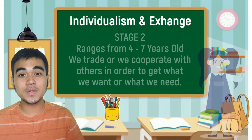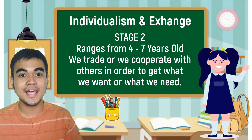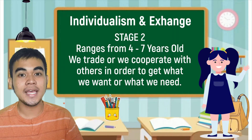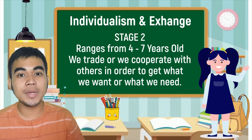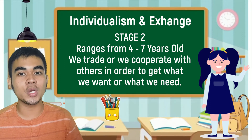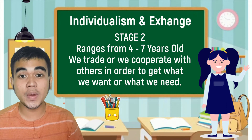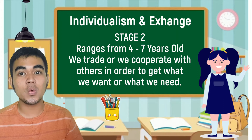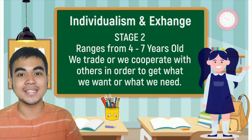The next stage is stage 2, which is also known as the individualism and exchange orientation. It happens from 4 to 7 years old. At this stage, we trade or cooperate with others in order to get what we want or what we need. For example, you scratch my back and I'll scratch yours. At this stage, we can see a two-way benefit for both parties.